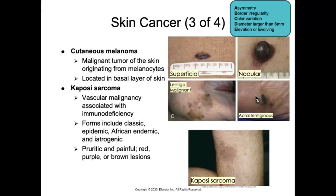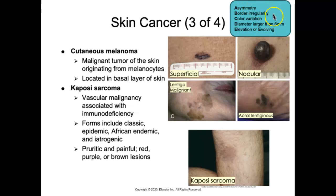The development of melanomas is typically associated with tumor suppressor genes and proto-oncogenes. We can monitor skin markings using the ABCDE rule: A stands for asymmetry, B for border irregularity, C for color variation, D for diameter larger than 6 millimeters (the size of a pencil eraser), and E for elevation, where the lesion is raised, or evolving, meaning some type of change is taking place.